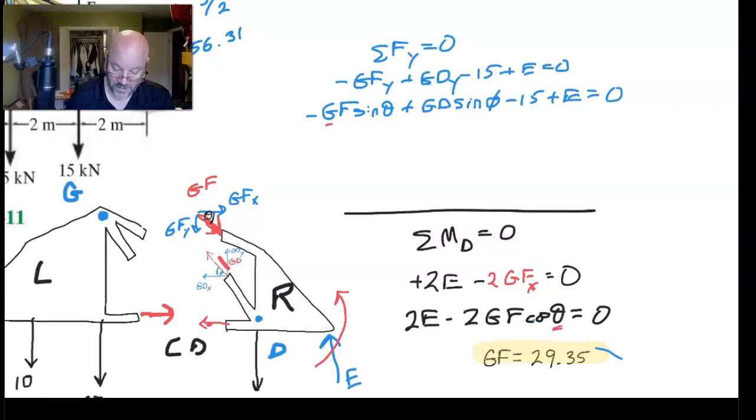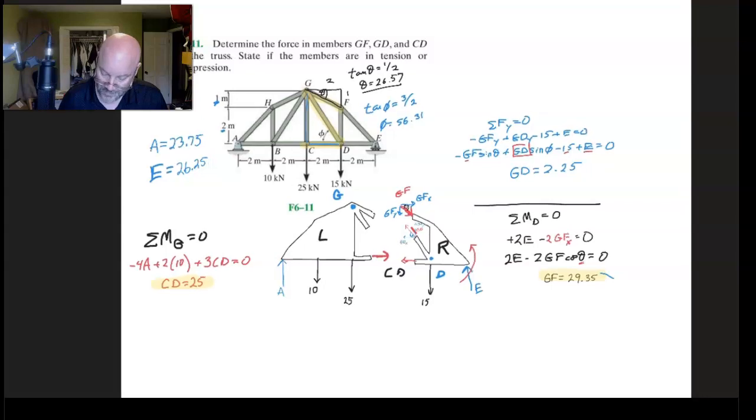Now we have already figured out GF. We know 15. We know E. All that remains is solve algebraically for GD there. And once you do that, it's kind of a funny number because it's so different than all of the others. 2.25. So let's back out of this. Just a little back away. Get a bigger look. And there's our third value right there. And it was, its force is directed away from the pin. So that means it's in tension.